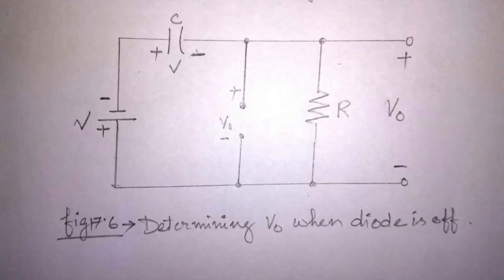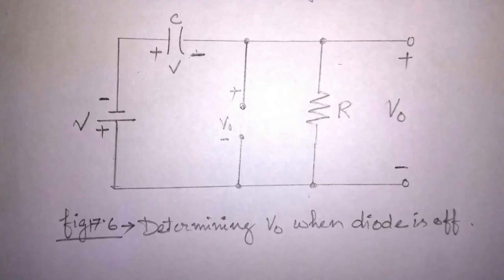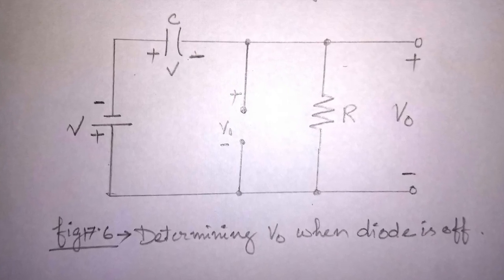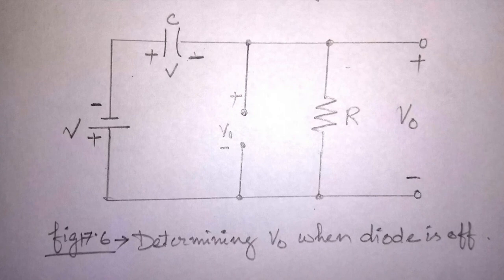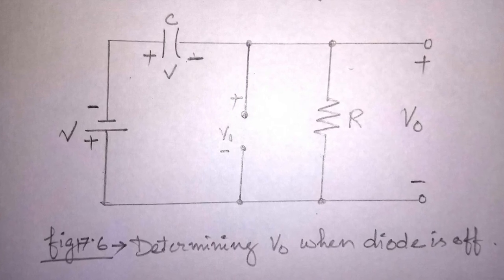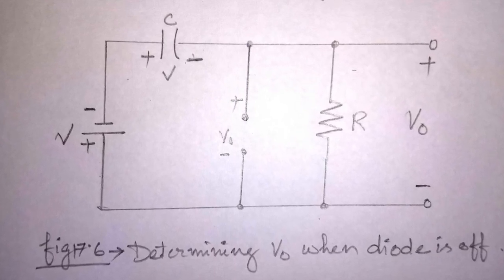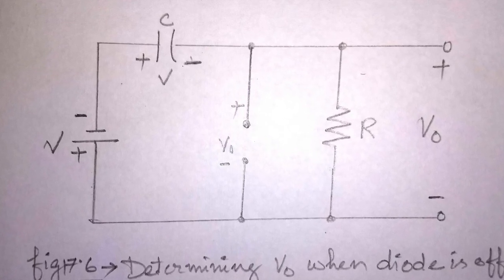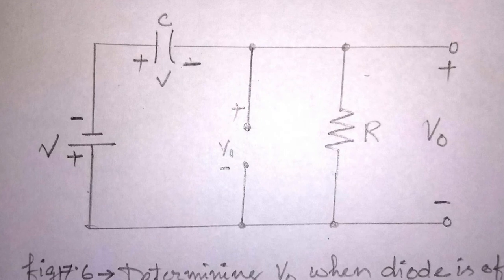During the negative half cycle, the input voltage switched to minus V volts, the network becomes as shown in this figure. The diode acts as open circuit, and the equivalent of the diode is determined by the applied signal and stored voltage across the capacitor. Both of them pressuring current through the diode from cathode to the anode.